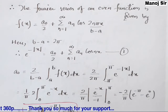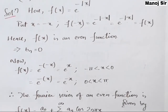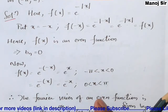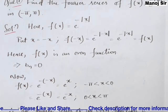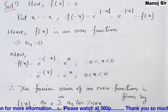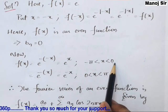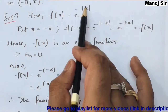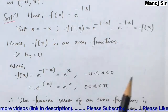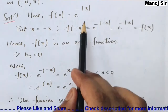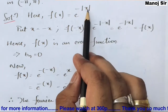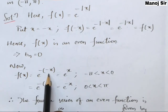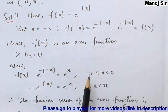Let us see why: we need to break the limit of −π to π into two parts — minus pi to 0, and 0 to pi — because of the modulus. When x is in [−π, 0], mod of x becomes −x, so e^(−|x|) = e^x. When x is in [0, π], mod of x becomes x, so e^(−|x|) = e^(−x). Since we are using the limit 0 to π, the function f(x) = e^(−x).